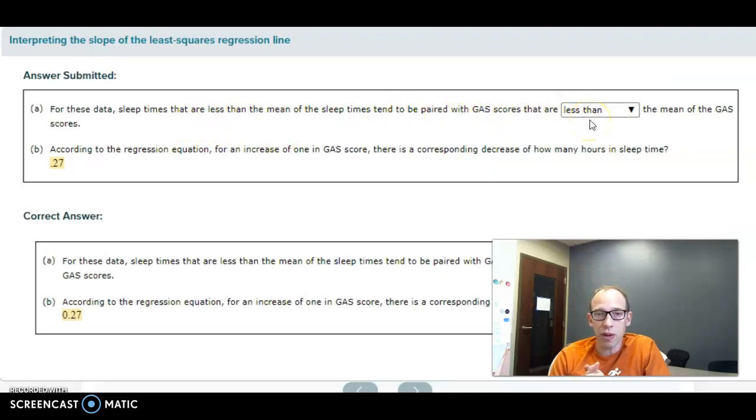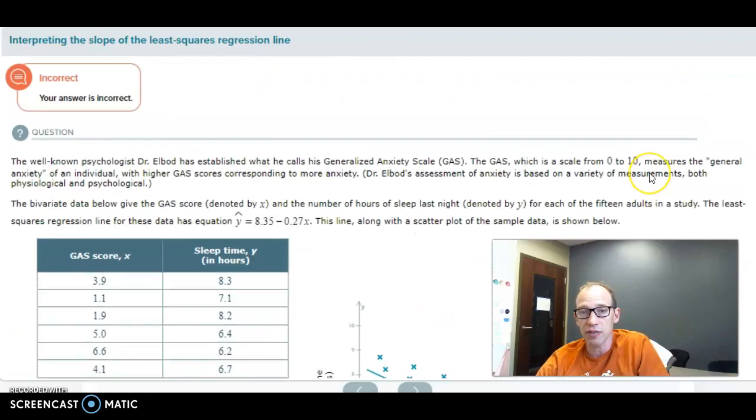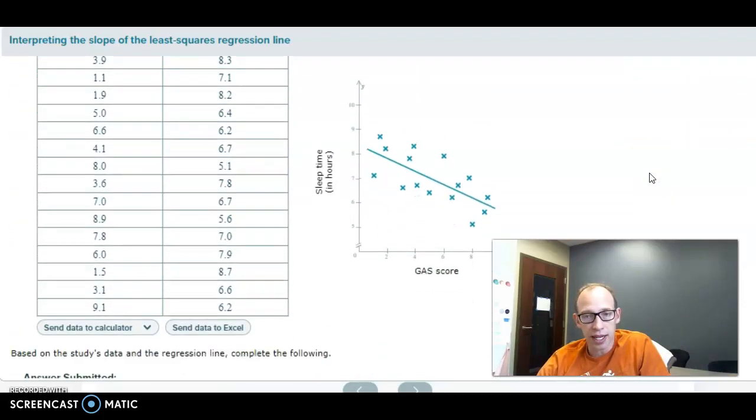A little thing that might help you remember this: if your correlation is positive, that means as one goes up, the other tends to go up. In other words, less than and less than will match up if it's a positive correlation. If one's less than, the other will be less than. If one's greater than, the other will be greater than. That's not what we had here.